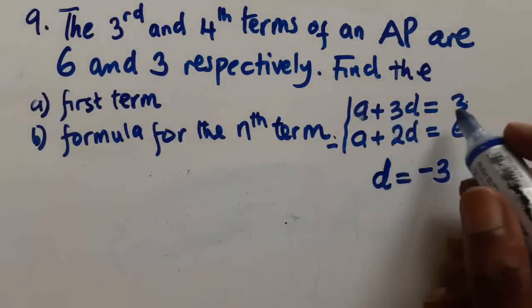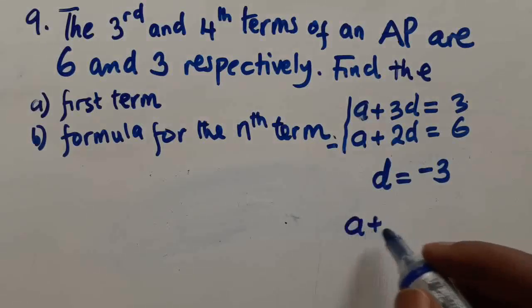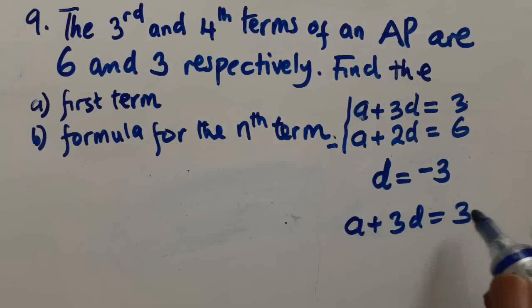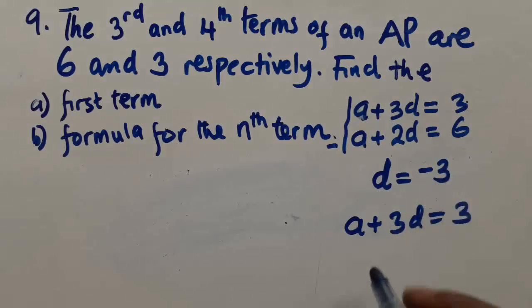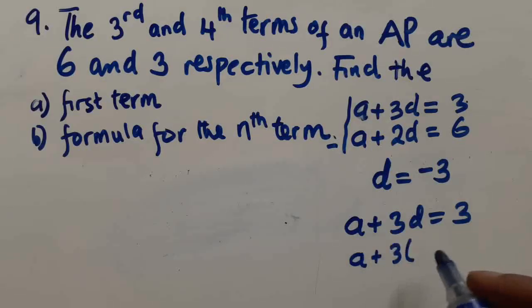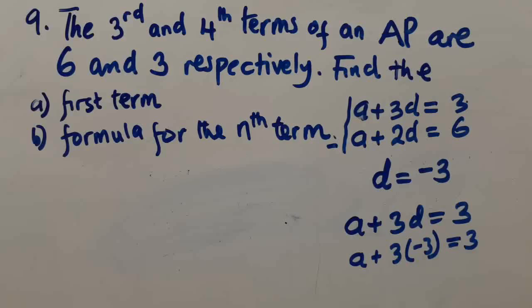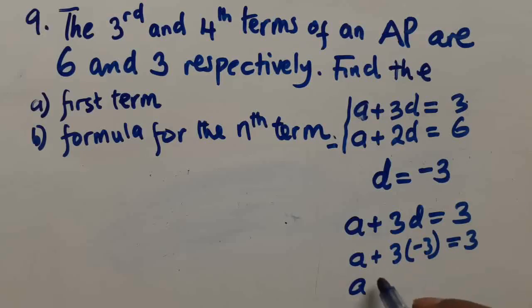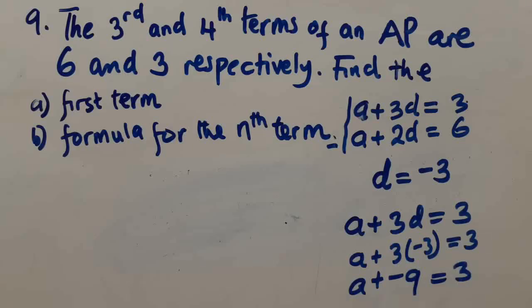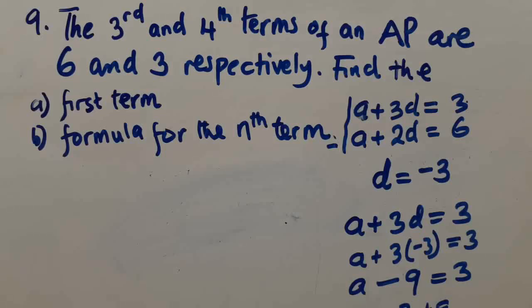To find 'a', we substitute d = -3 into one of the equations. Using a + 3d = 3, we get a + (-3×3) = 3, which is a - 9 = 3, so a = 3 + 9.